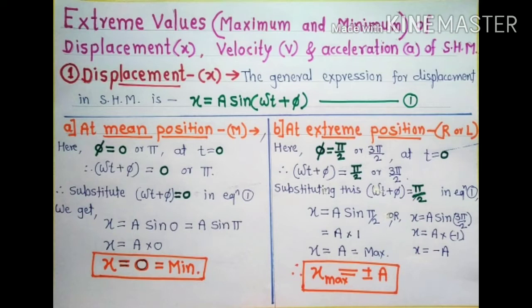First we study displacement x. We know the general expression for displacement at time t of SHM is given as x = A sin(ωt + φ), equation number one. From this equation, the values of displacement, velocity, and acceleration are maximum or minimum at either the mean position or extreme position.